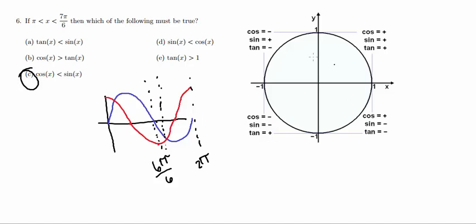But we can go ahead and further investigate it. So let's take a look at this unit circle over here to the right. So 6 pi over 6, or just pi, is right here, and 7 pi over 6 is going to be somewhere right here. So we're looking at values within this area.